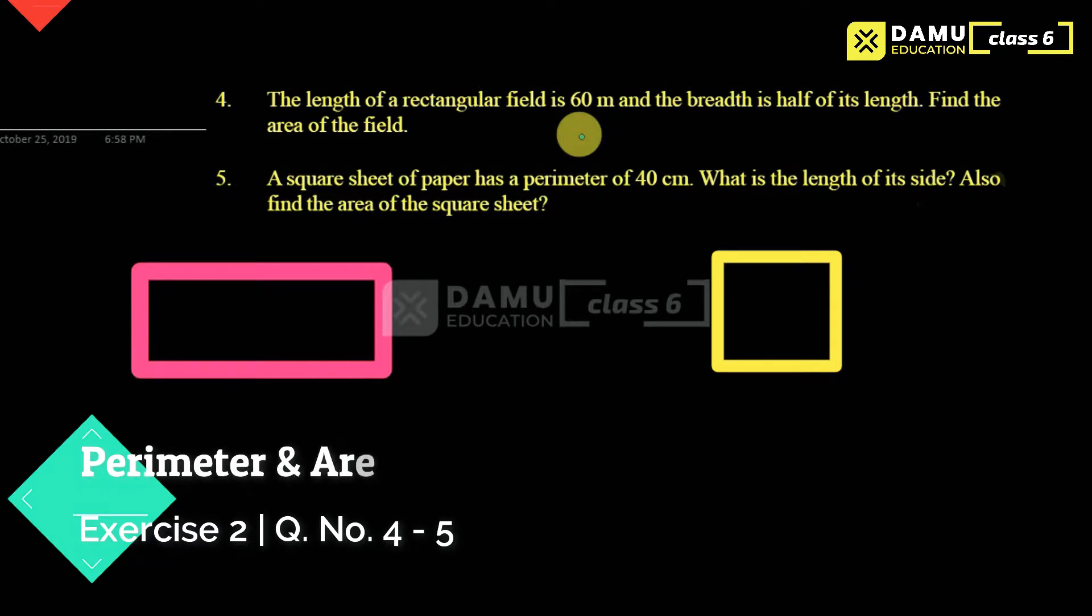So here in this fourth question, what we have to calculate is: the length of a rectangular field is 60 meters and breadth is half of its length. Find the area of the field. So let's take a rectangle ABCD.